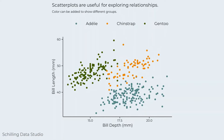You can add color to a scatterplot to show different groups. Species is used to make each point a different color, and we can see the pattern of bill length and depth by species.